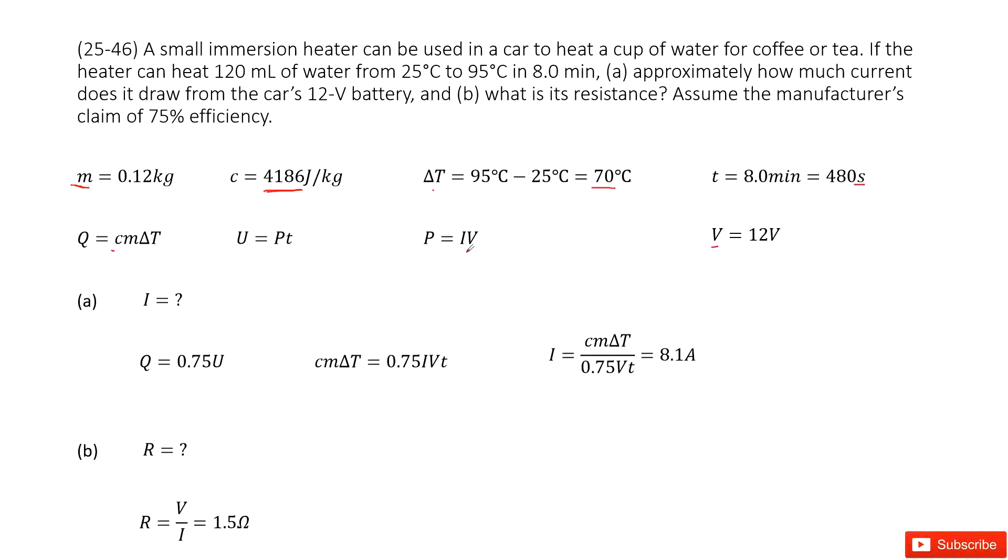The first question asks you approximately how much current does it draw from the car's heater. Now assume this manufacturer's claim is 75% efficiency. So what does that mean? That means the energy absorbed by the water just equals 0.75 times the energy released by the heater. So we have this function.